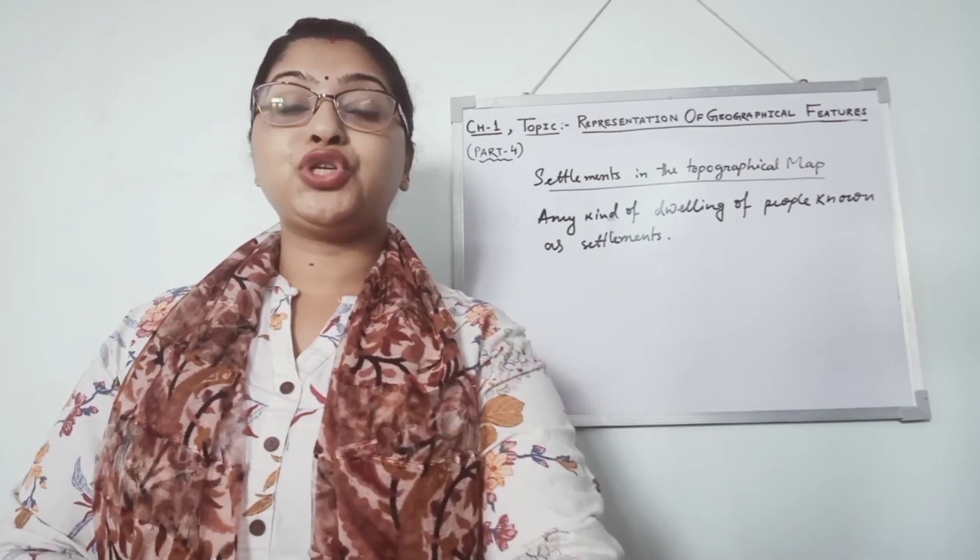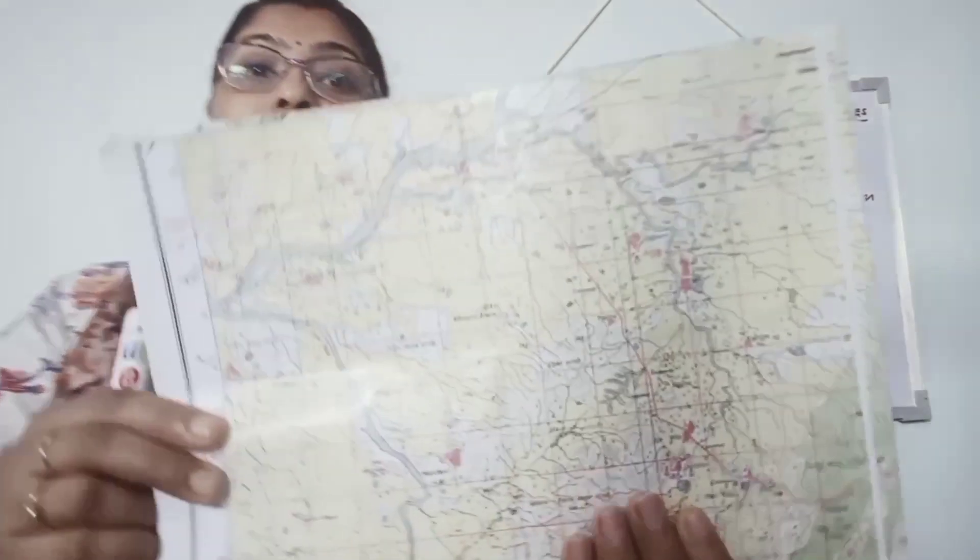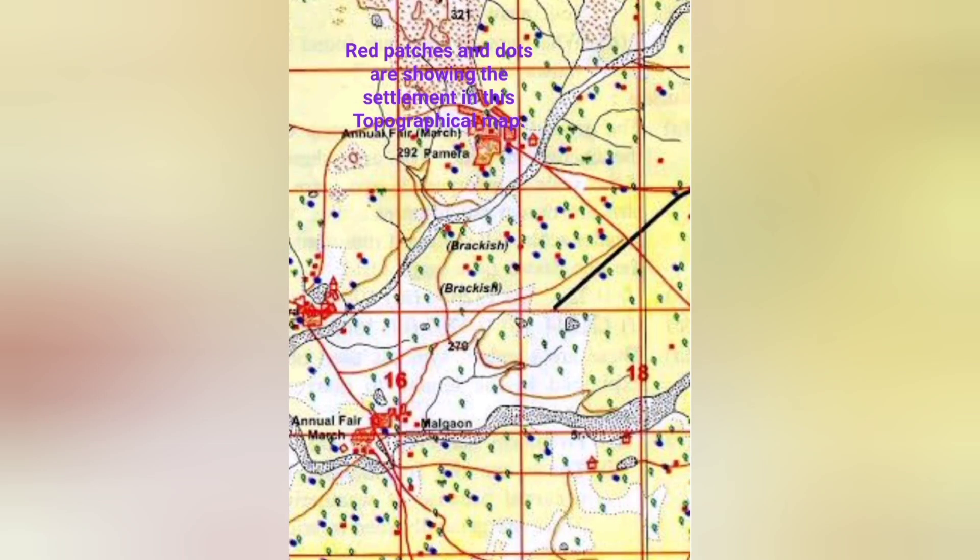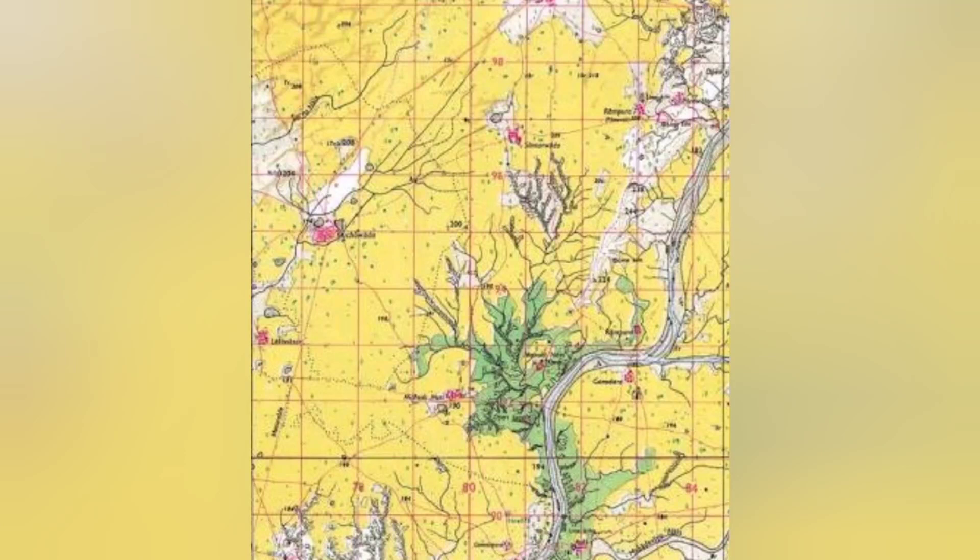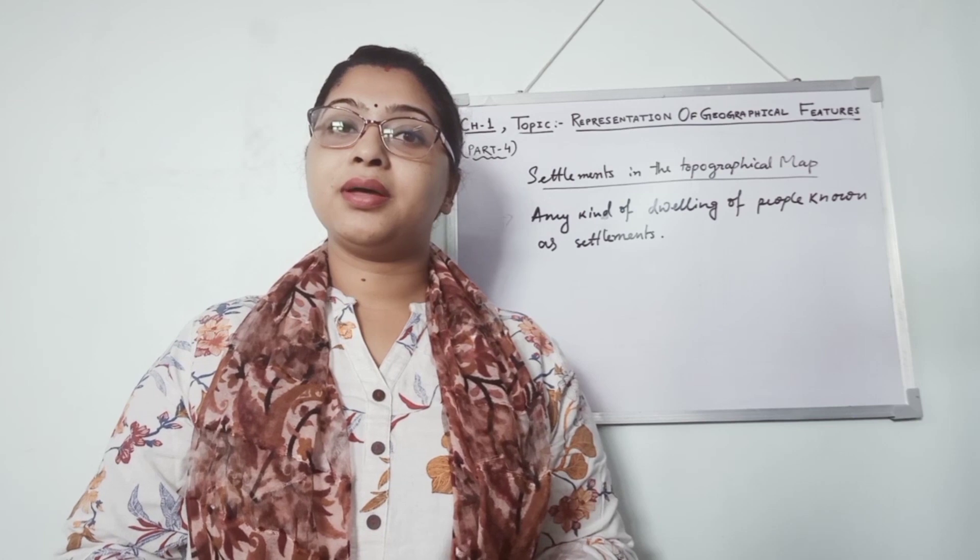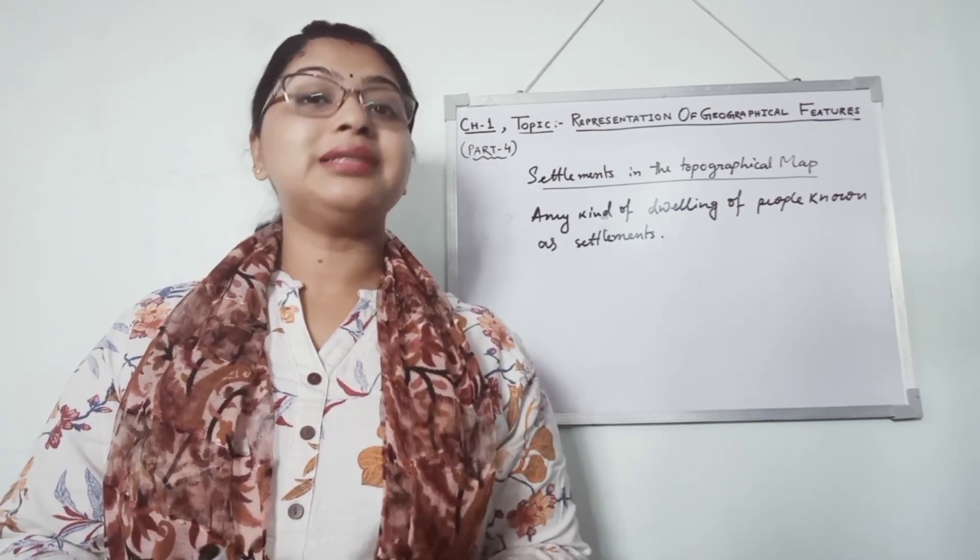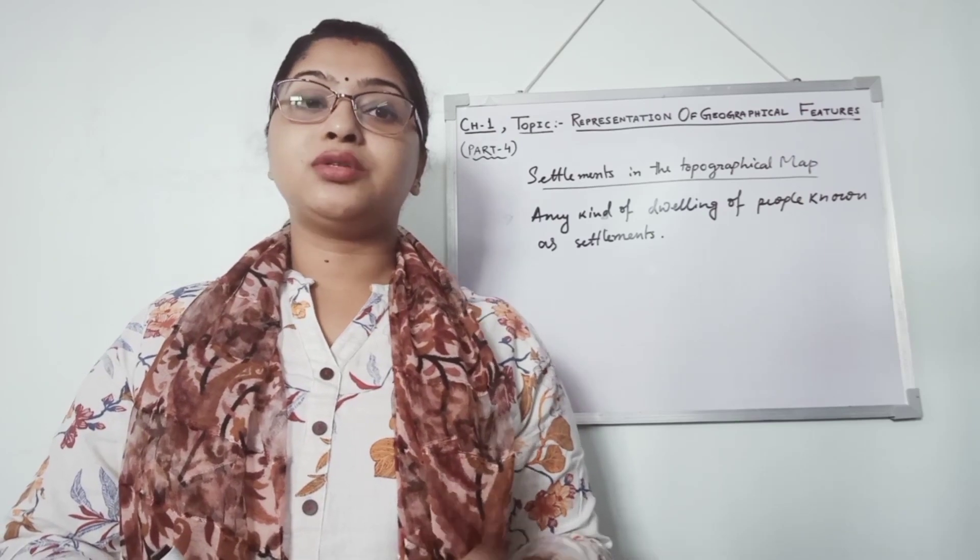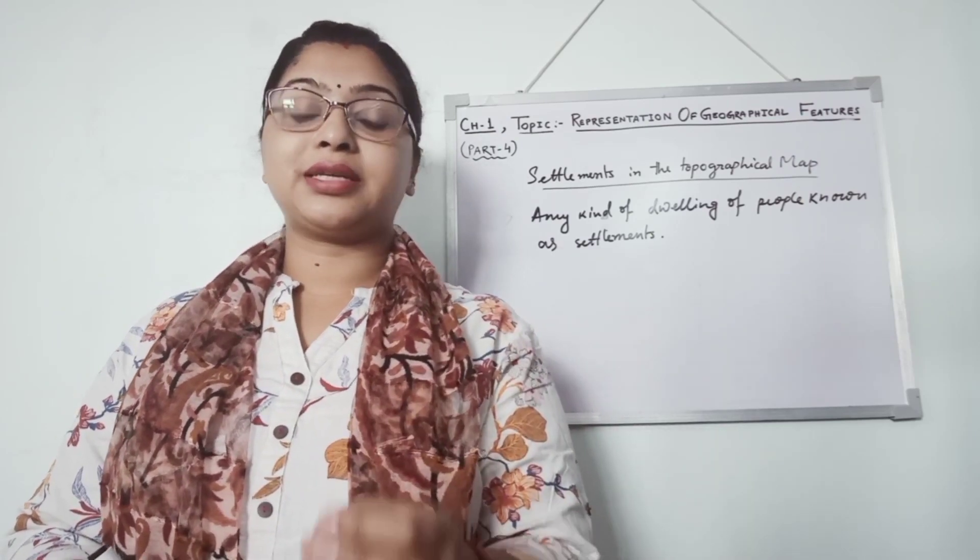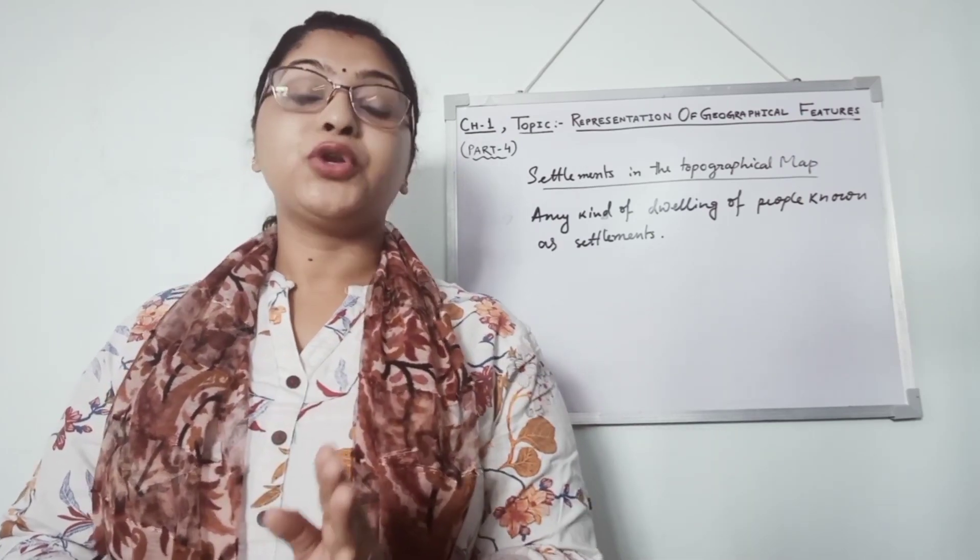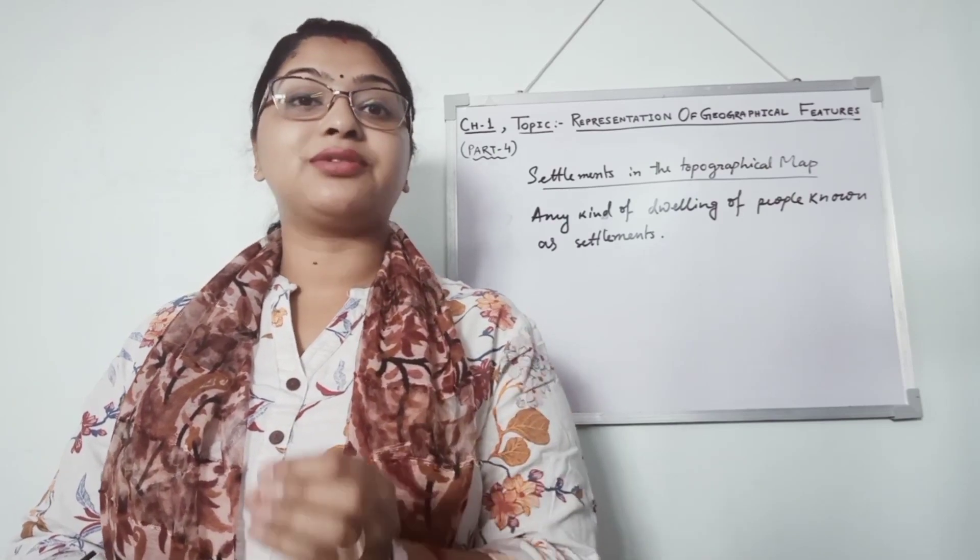Now I am showing a map. You have seen the map. And in that map, some red patches you have seen. These are the settlements. So how we can locate that settlements in that map, topographical map by seeing that red patches.